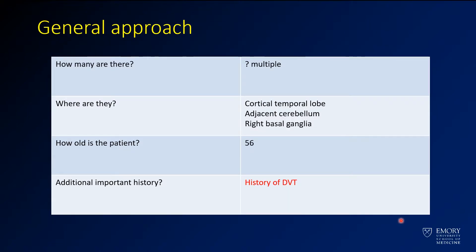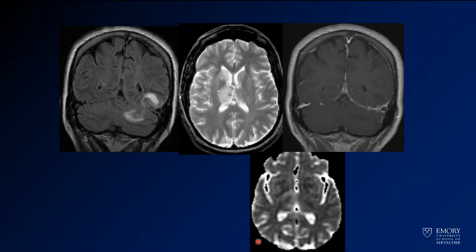So here we're looking at multiple lesions — or at least we think there are probably multiple lesions — involving the corticotemporal lobe and the adjacent cerebellum. This patient is 56 years old. A history I hadn't given you yet: this patient has a history of DVT. Once you look into it more closely, that makes you think this patient has a coagulation abnormality, and that goes along with what we're seeing here.